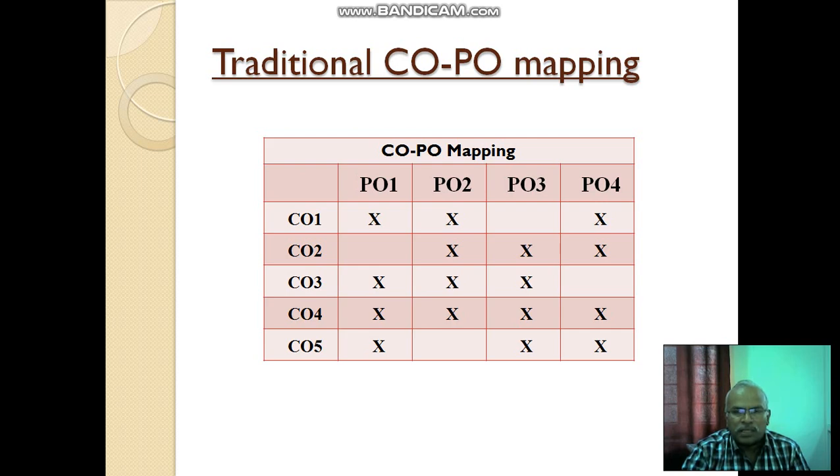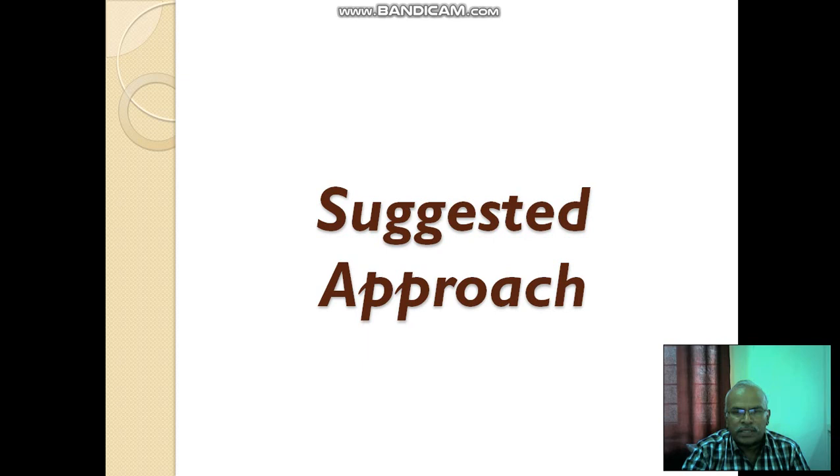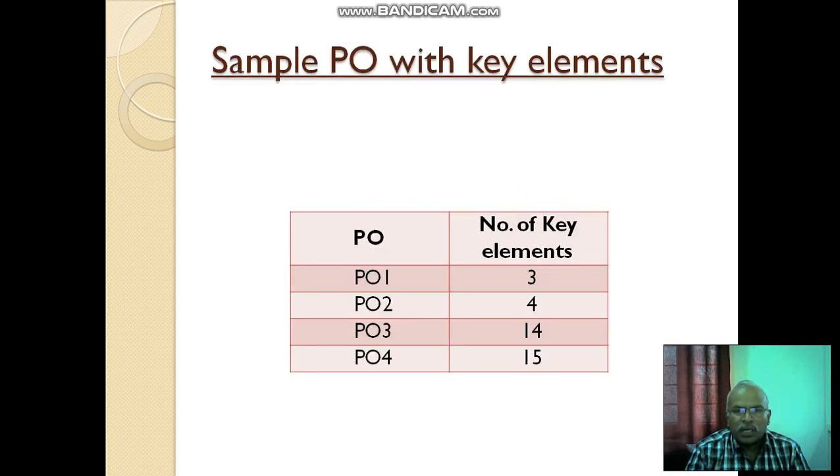Now we consider our methodology. How it can be applied, which is a suggested approach? Assume that there are 4 POs we have taken: PO1, PO2, PO3, PO4. And PO1, as we defined in lecture 5, 3 key elements. Similarly, PO2, if you consider 4 focused elements are key elements. PO3, 14 key elements. PO4, 15 key elements.